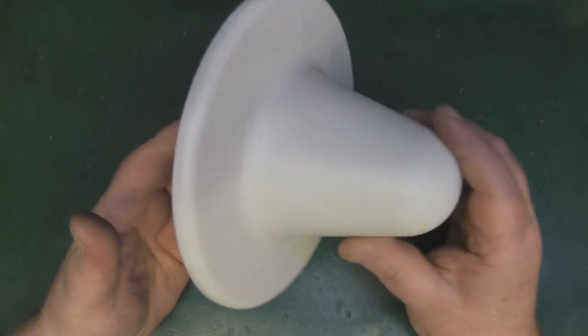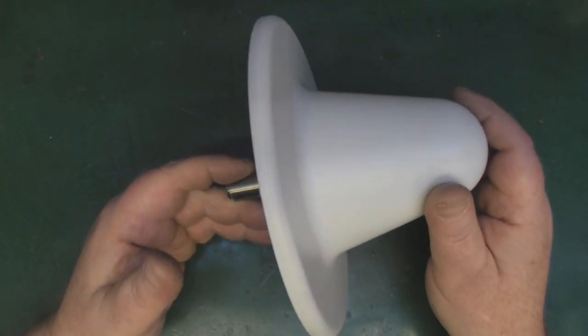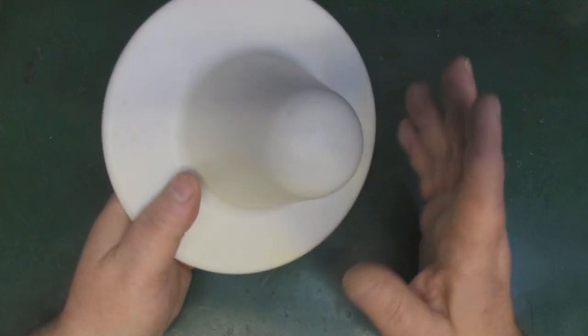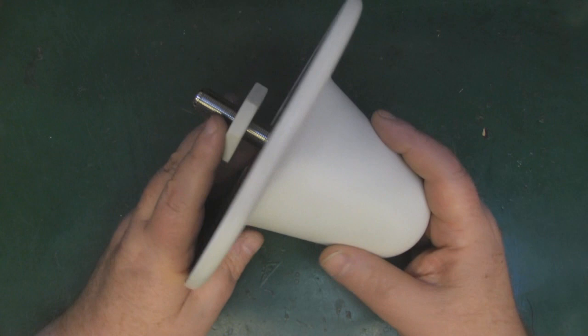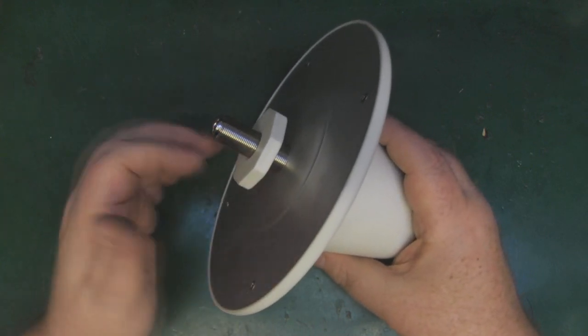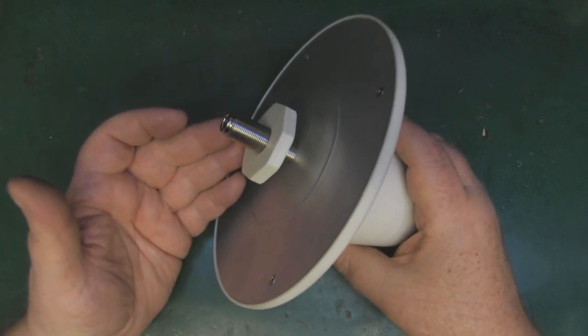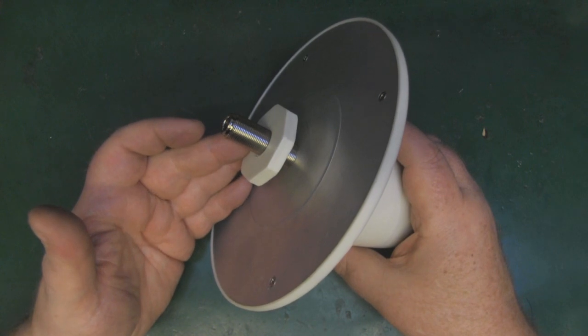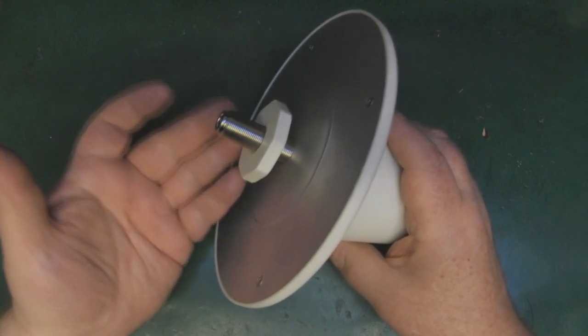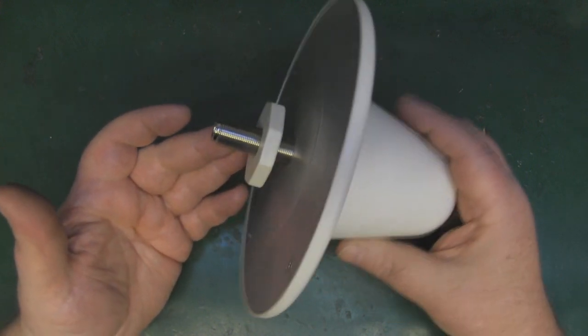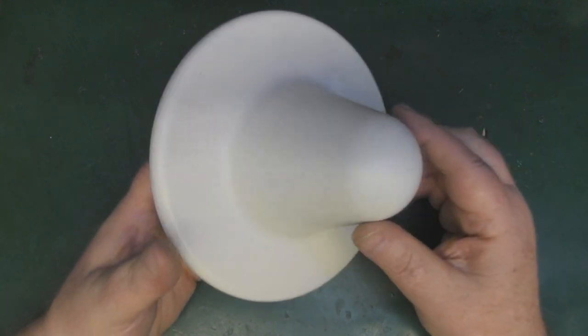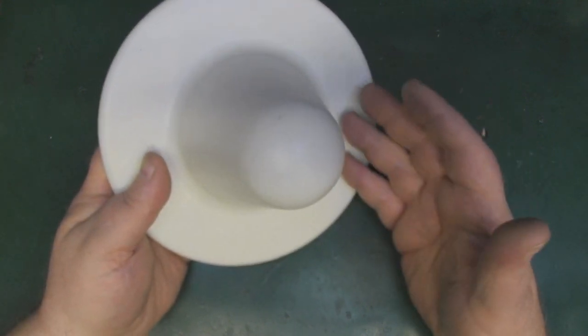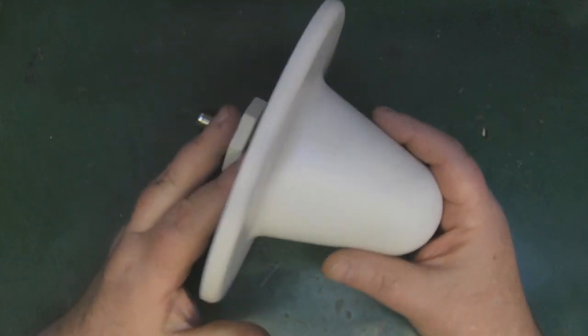I've got another interesting antenna to look at that I picked up off eBay. The seller has a few of these, selling them pretty cheap at about seven pounds. He told me this came out of some student accommodation. It's a ceiling mount Wi-Fi antenna for 2.4 gigahertz with 5 dB of gain.